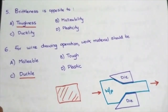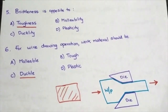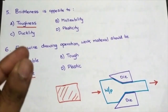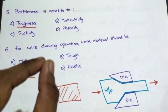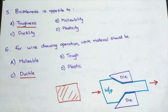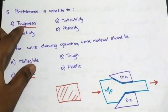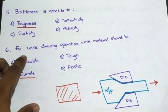Next question: brittleness is opposite to — toughness, malleability, ductility, or plasticity? A brittle material is one that breaks down immediately when a force is applied. The opposite of this behavior is toughness, so the answer is toughness.